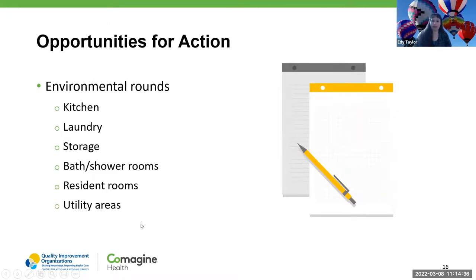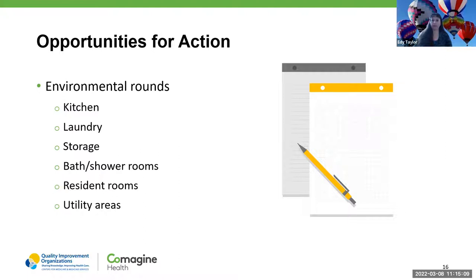Other opportunities for action include doing your environmental rounds. Look at your kitchen — is food being stored at proper temperature? If not, it can lead to food poisoning, quickly making a lot of people sick, especially those with comorbidities. Is the laundry water temperature hot enough to sanitize linens? Are baths and showers being cleaned and sanitized? These responsibilities belong to everyone in the community — your staff, your residents, the families, everybody is involved.